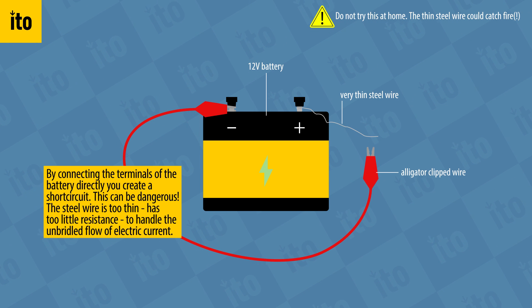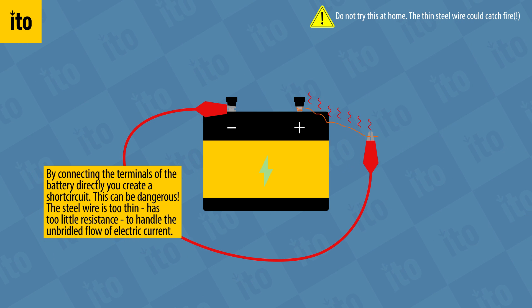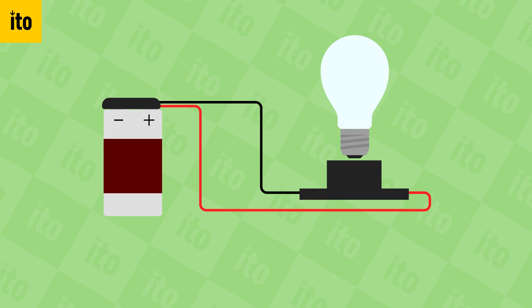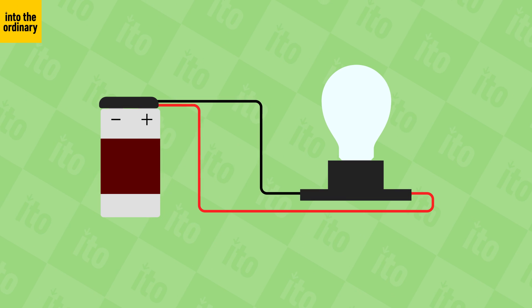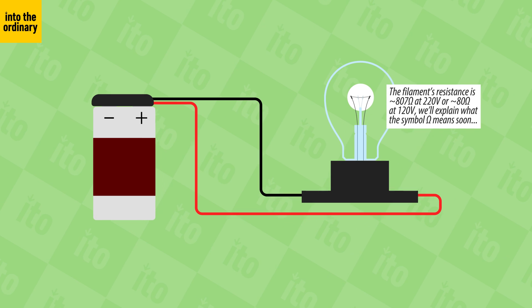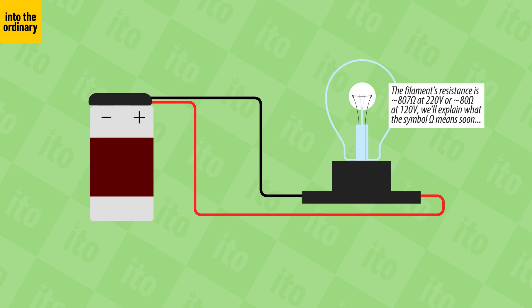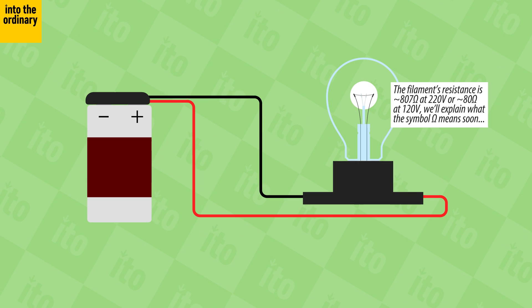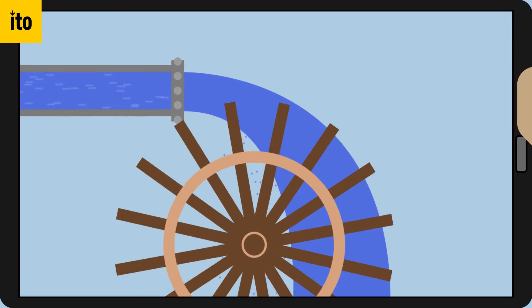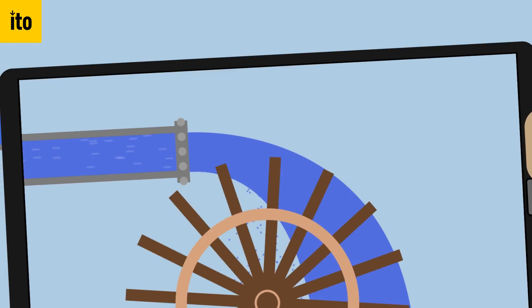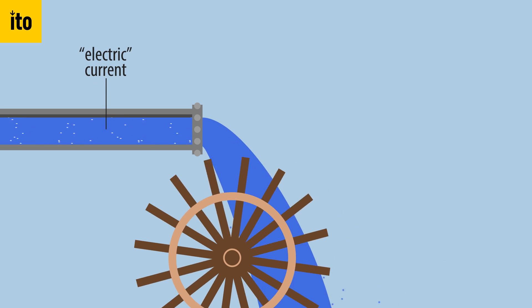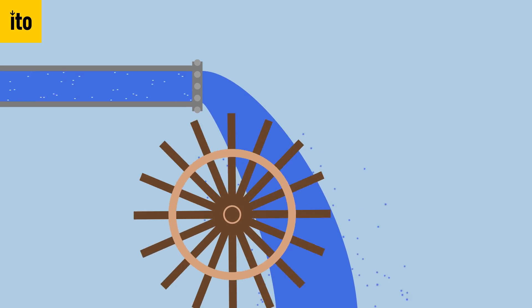Another example of too much resistance would be hooking up a 9-volt battery to an incandescent light bulb — it won't do much. The bulb is designed for far higher voltages. Therefore, its filament has far too much resistance than a 9-volt battery can overcome. To illustrate, we'll approach the water wheel from the voltage video from a different angle. In that video, we adjusted our current to get things moving, keeping the wheel the same.